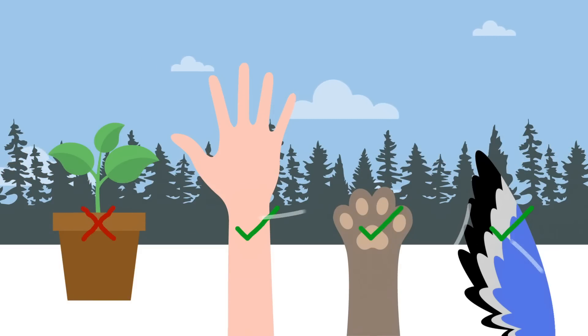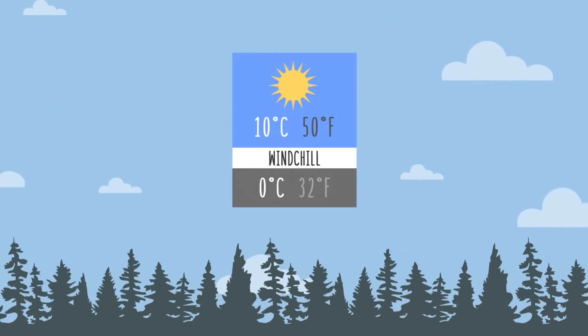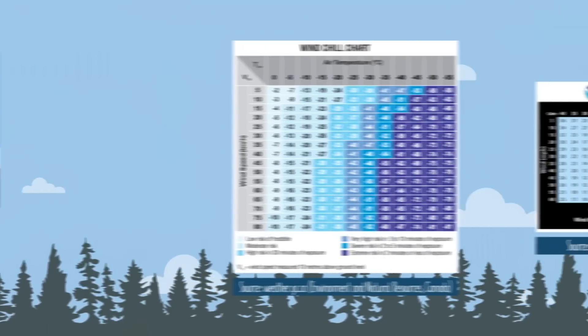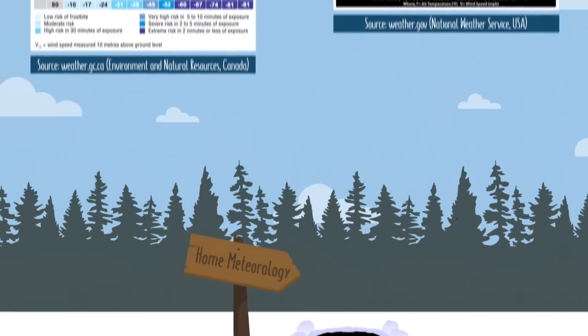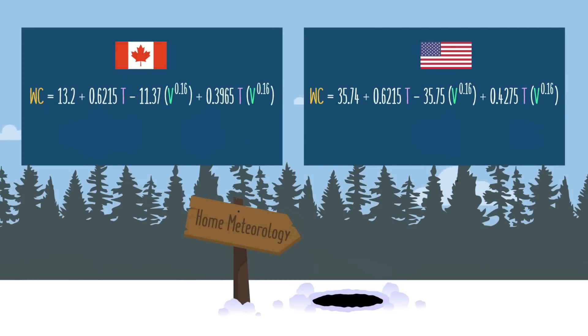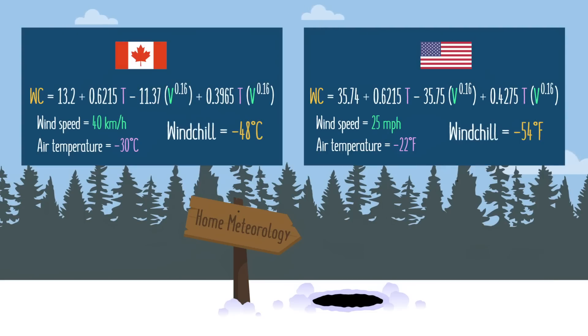For us, the windchill is not only relevant but also potentially very dangerous, which is why it's usually mentioned in the weather forecast, and why many countries around the world have come up with handy conversion charts like these. But it's also something you can calculate yourself. These are the formulas used in Canada and the US, and while other countries may use slightly different systems, they're all based on a similar concept. So, if you know the wind speed and the air temperature, which you can easily measure at home if you have the right equipment, you can plug them in and quickly solve for the windchill. But since math can be hard, there are also some handy online calculators, which I'll link to in the description.